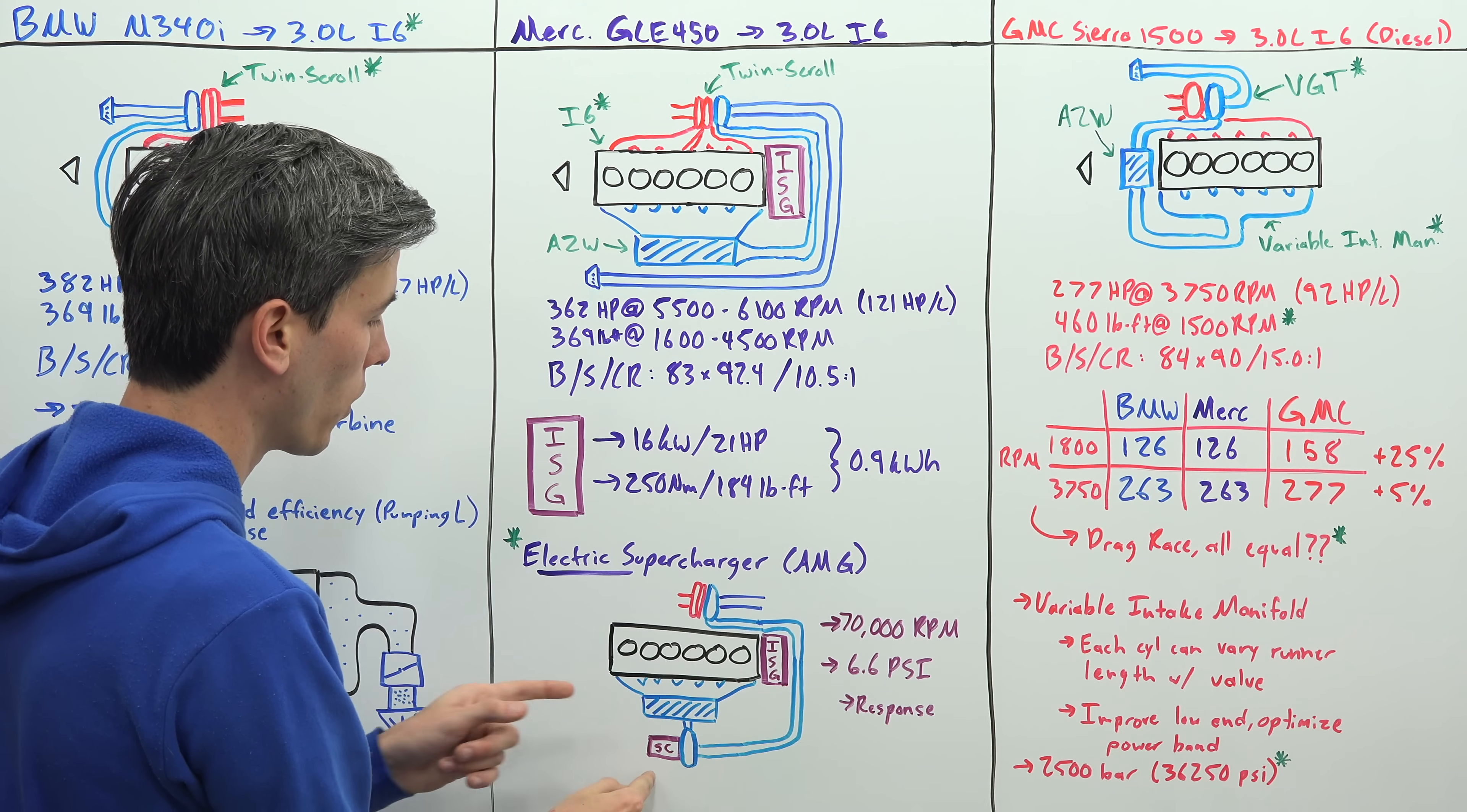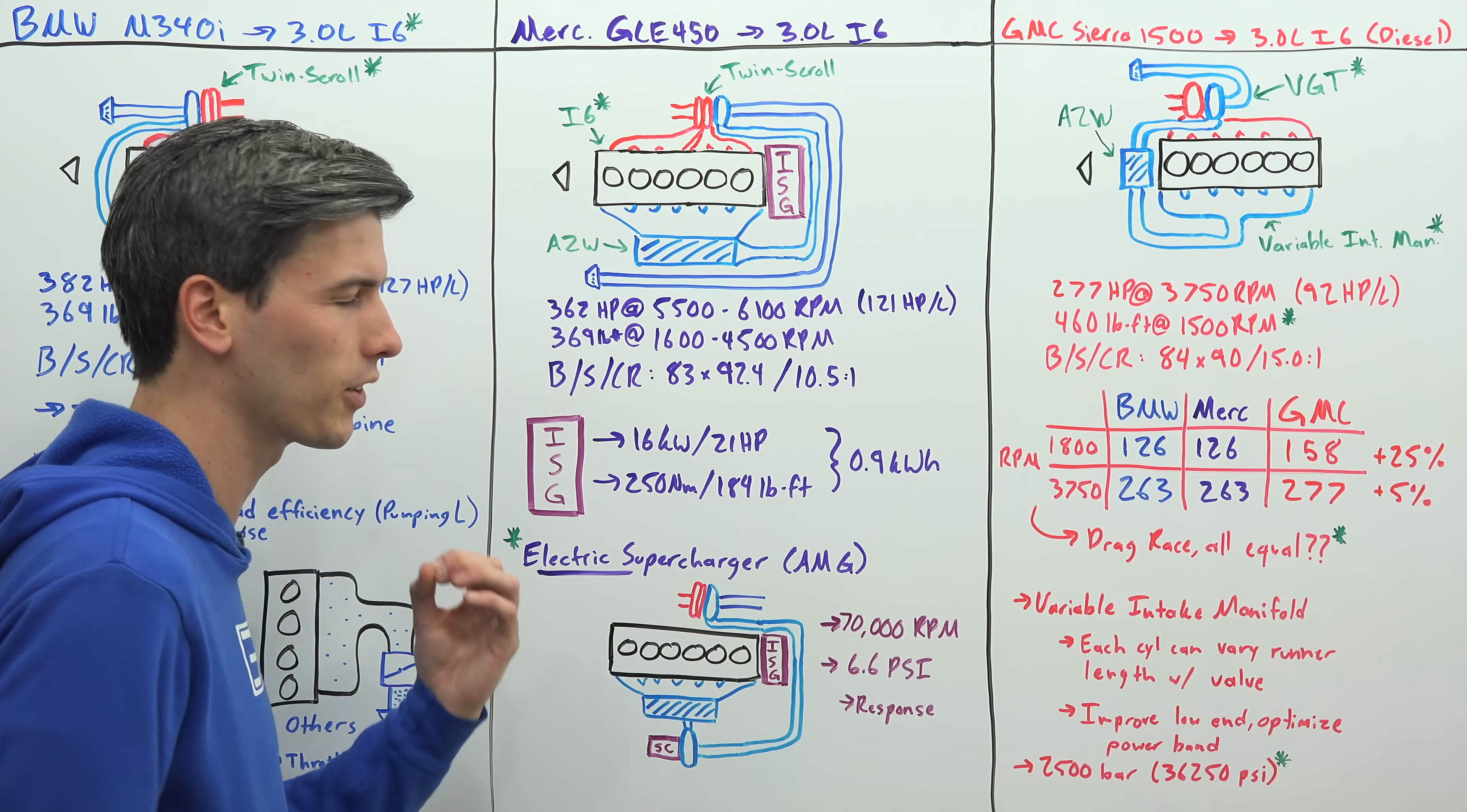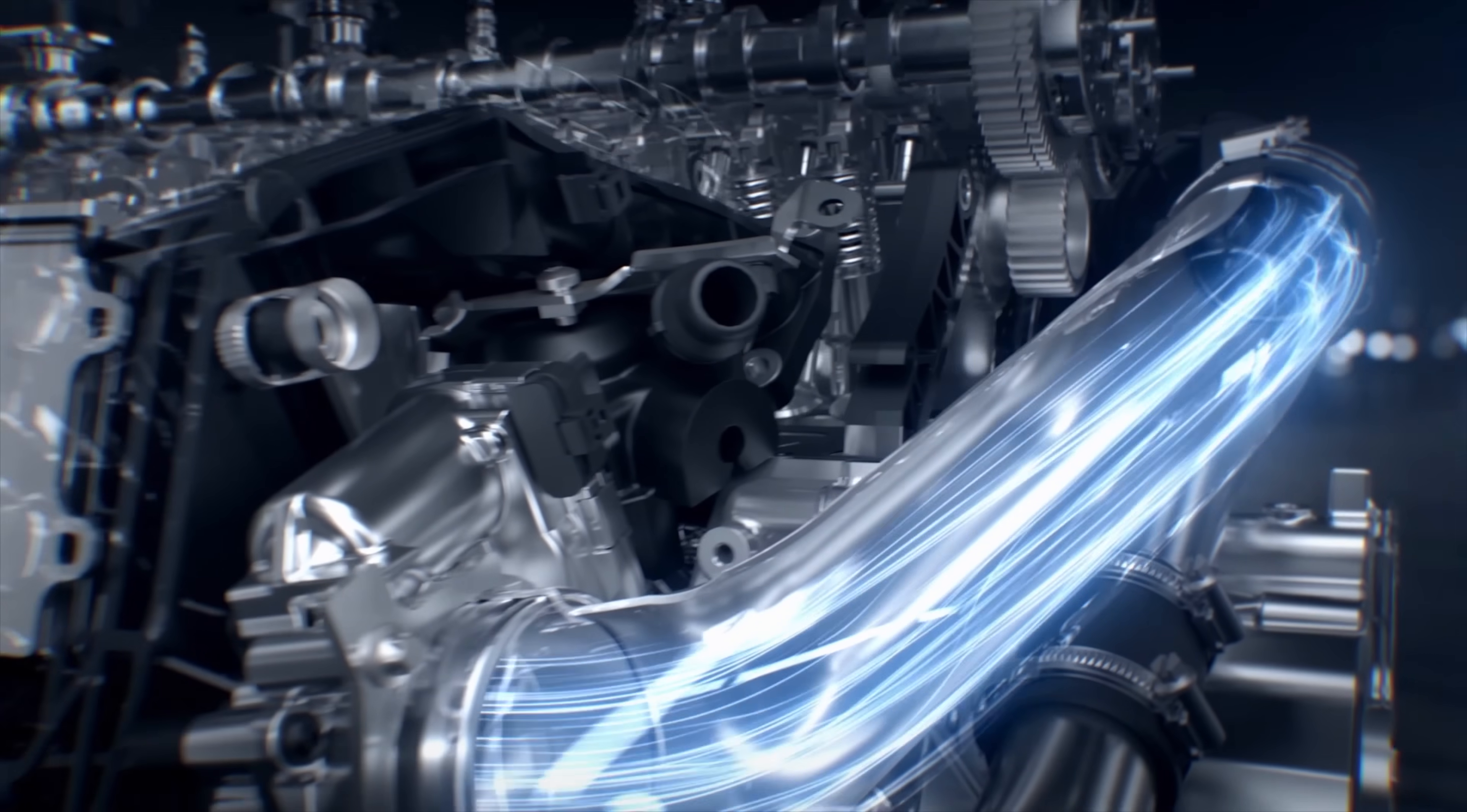Instead of that intake air coming from the compressor side of the turbocharger and then passing through the air to water intercooler, first you have an electric supercharger. You've got an electric motor spooling up a compressor that can spin very quickly up to 70,000 RPM and help create 6.6 psi of peak boost very quickly.